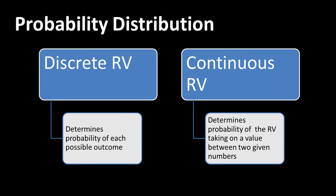The probability distribution of a discrete random variable determines the probability of each possible outcome. For example, with a fair coin toss, the probability of heads is 0.5 and the probability of tails is 0.5. There are no other possibilities. That is the probability distribution for a coin toss.